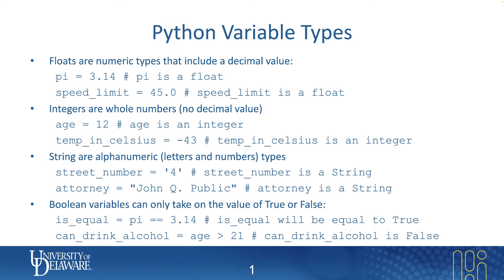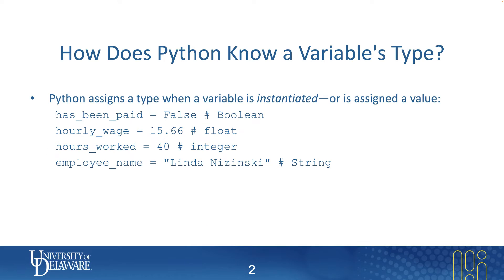So those are the four types we'll be using this semester: floats, integers, strings, and Booleans. How does Python know a variable's type? This is very important. Python uses a specific approach called duck typing — basically, whatever you assign it, that's its type. So if we say has_been_paid equals False, Python will automatically make that a Boolean. If hourly_wage equals 15.66, since there's a decimal, Python assigns the type float. If hours_worked is 40, a whole number, Python assigns integer. And if employee_name has quotes on the right side, that's a string.